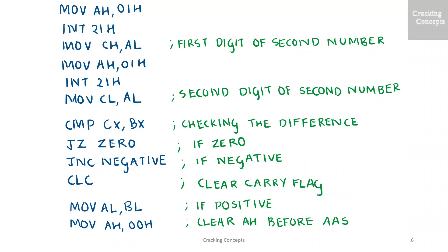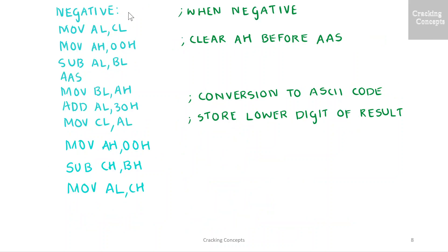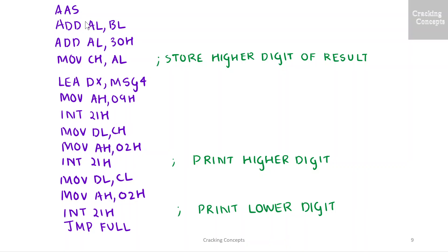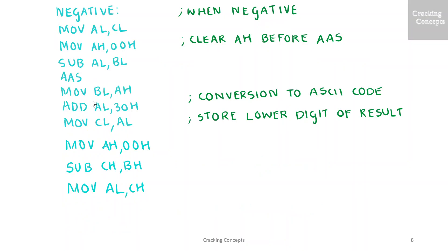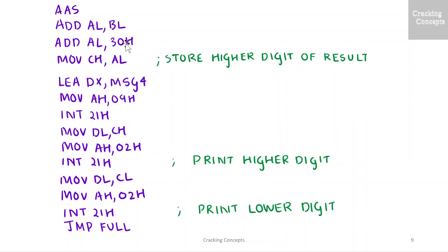The third case is when the difference is negative. We jump to the label 'negative'. We copy the value of CL to AL, clear the AH register before ASCII adjust, and subtract AL and BL. The result will be in AL. The value of AH will be stored to BL. The result of subtraction is converted to ASCII and stored in the lower digit CL. I clear the value of AH and subtract the higher digits CH and BH. The result in CH is copied to AL to perform ASCII adjust. The value of AL is added to AH from the previous subtraction, which is in BL, and converted to ASCII and stored in higher digit CH.